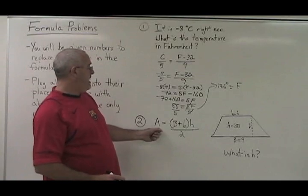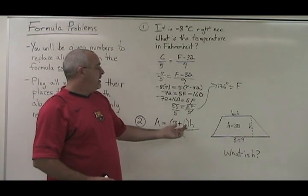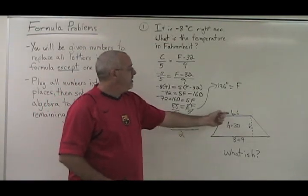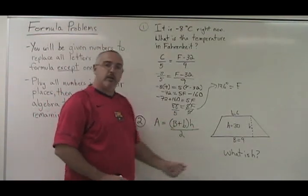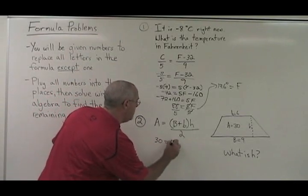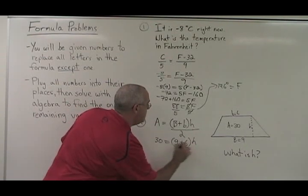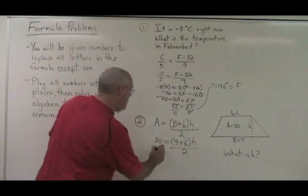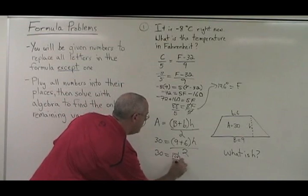In example 2, we have A equals bracket big B plus little b times H over 2. We are given A equals 30, little b equals 6, and big B equals 9 in this diagram, and they are asking what is H. So we replace the letters with all the numbers we were given: 30 equals bracket 9 plus 6, close bracket, times H over 2. Our unknown is H — it's the only thing that we don't know.